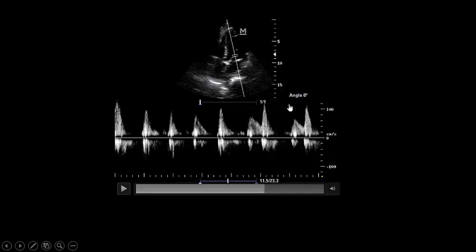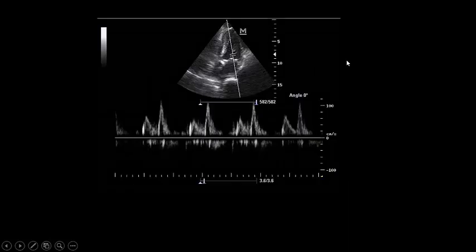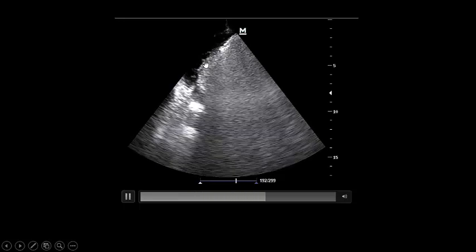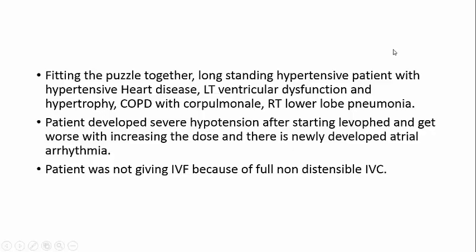If you see a patient with grade 1 diastolic dysfunction, you need to know this patient needs an atrial kick greatly, and with loss of atrial kick the patient will get into trouble. The right lower lobe consolidation shows very dense B-lines and consolidation. Fitting the puzzle together: long-standing hypertensive patient with hypertensive heart disease, left ventricular hypertrophy and dysfunction, COPD with cor pulmonale, right lower lobe pneumonia, severe hypotension after starting vasopressor worsening with increased dose, and newly developed atrial arrhythmia.